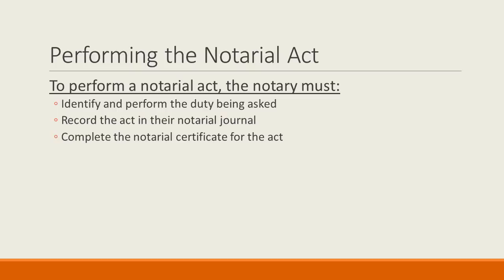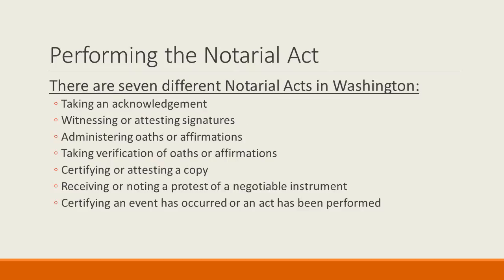Once the notary has confirmed the signing party's identity and mental state, the last step in this process is to perform the notarial act. Performing a notarial act requires three parts: identifying the notarial task requested, recording the act in the notary's journal, and completing a notarial certificate. In the state of Washington, there are seven possible notarial tasks that a notary may be asked to perform: taking an acknowledgment, witnessing or attesting a signature, administering an oath or affirmation, taking a verification of an oath or affirmation, certifying or attesting a copy, receiving or noting a protest of a negotiable instrument, and certifying an event has occurred or an act has been performed. We will go through each of these in more detail in turn.